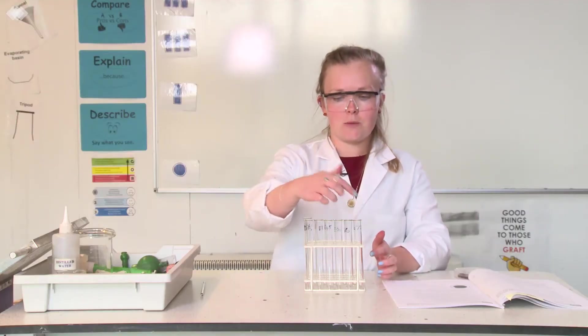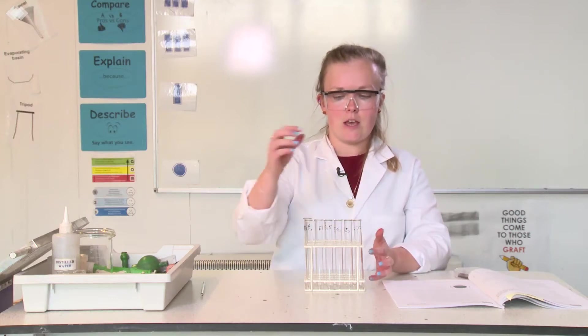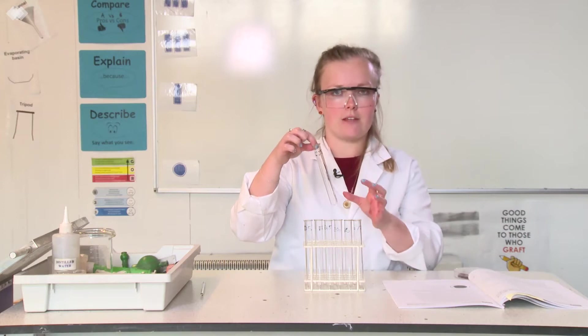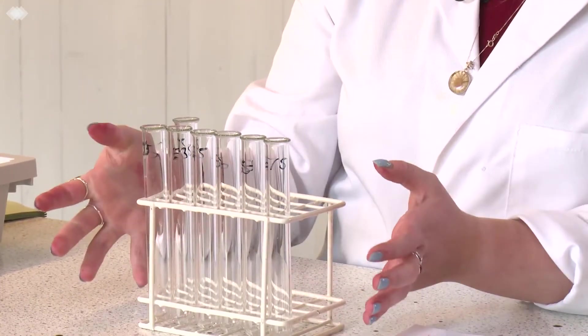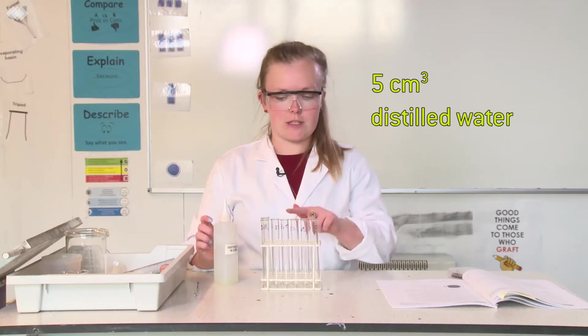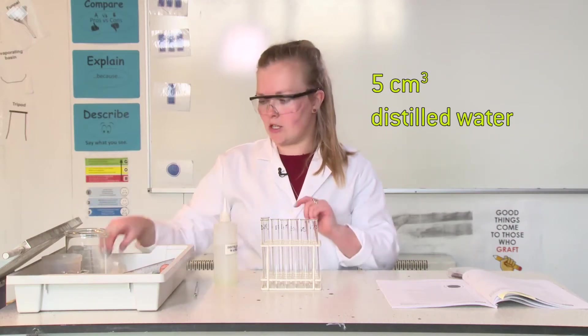So, label your test tubes with the temperatures that you're going to be using. You also need a control test tube. This one is not going to have any beetroot in it. Once you have your test tubes, you need to add five centimeters cubed of distilled water to each of your test tubes.